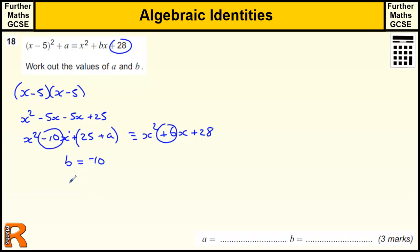And similarly, 25 plus a equals 28. So a must be 3. So a is 3, b is minus 10.